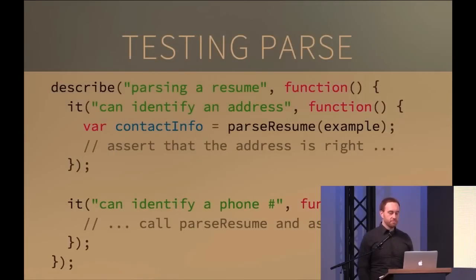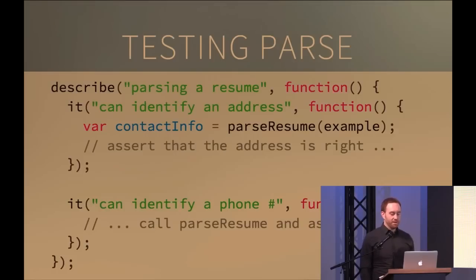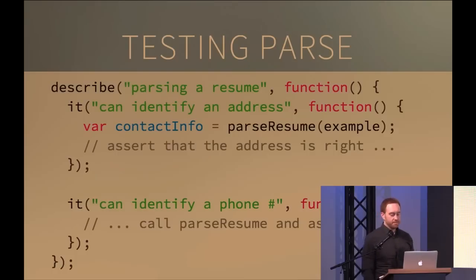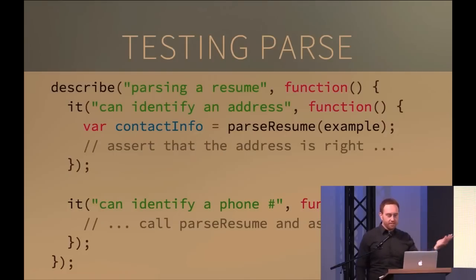Testing parse is easy — Mocha style. In a describe block for 'parsing a resume', 'it can identify an address': set up arguments with some example resume string, call `parseResume`, get back the `contactInfo` object, assert the address looks right. For 'identify a phone number': same thing — call `parseResume` with a different example, make an assertion about `contactInfo`. Very straightforward.